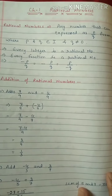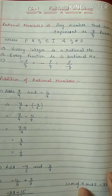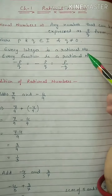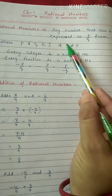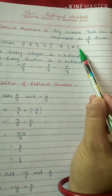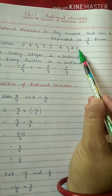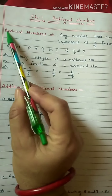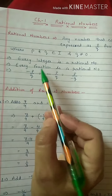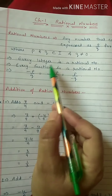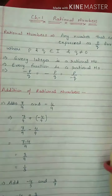Any number which you can express in the form of P by Q is called a rational number. In this, P and Q are integers and Q should not be 0, because if Q is 0 then the number will be undefined. All whole numbers, natural numbers, integers and all fractions are coming under rational numbers.